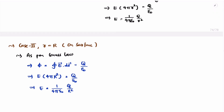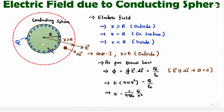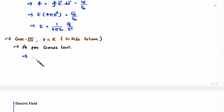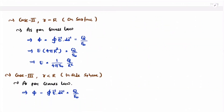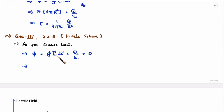In the third case, I will calculate the electric field inside the conducting sphere, where small r is less than capital R. Applying Gauss's law inside the sphere, the total flux equals the total charge enclosed divided by epsilon naught. Since the entire charge is distributed on the surface only, the charge inside the sphere is zero. Therefore, the surface integration is zero, meaning the electric field inside the sphere is zero.